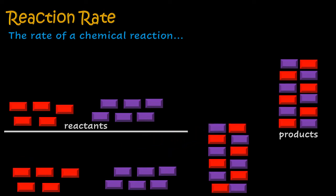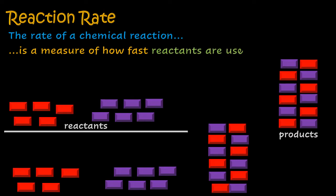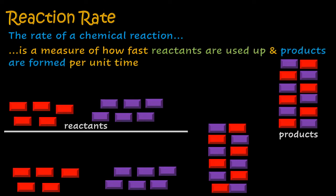Considering these two scenarios, we can say that the rate of a chemical reaction is a measure of how fast reactants are used up and products are formed per unit time.